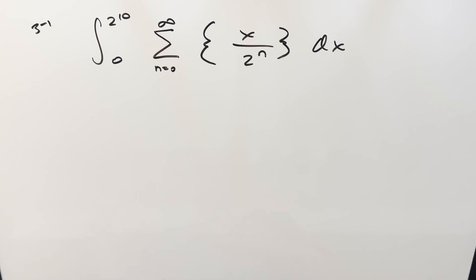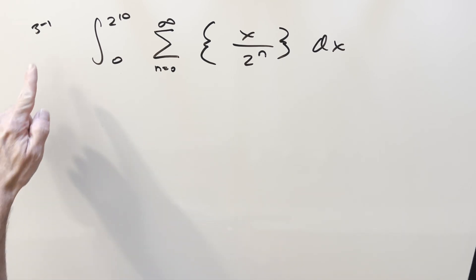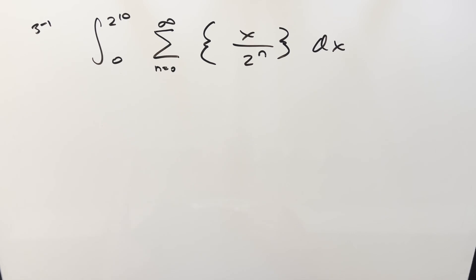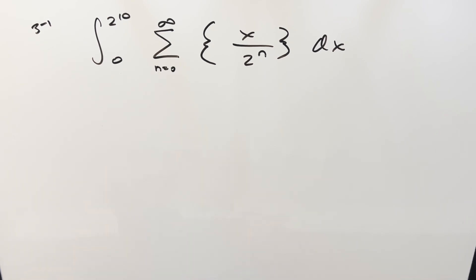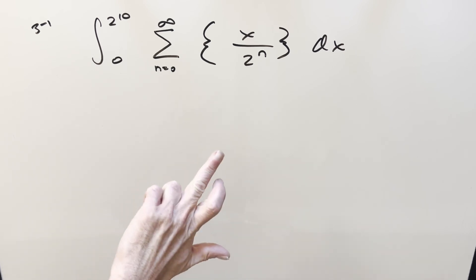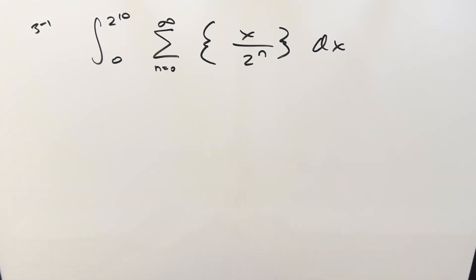We've got an interesting integral here today. This one's from MIT 2023 quarterfinals round 3, problem 1. We have the integral from 0 to 2 to the 10th of the sum from 0 to infinity of the fractional part of x over 2 to the n, dx.